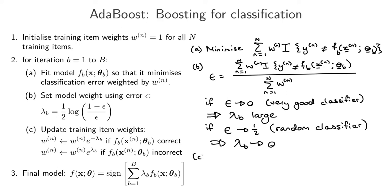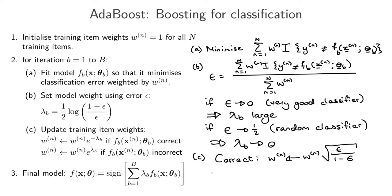Finally, let's look at step C in a little more detail. You can take the lambda equation and substitute it into the weight update equations for correct and incorrect predictions. For correct predictions, you update the weights for training items classified correctly by multiplying by epsilon divided by (1 − epsilon). For points that this classifier doesn't get correct, you take the current weight WN and multiply it by (1 − epsilon) divided by epsilon.